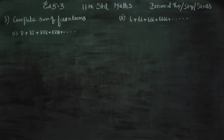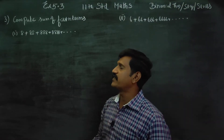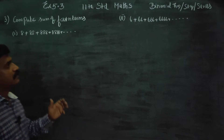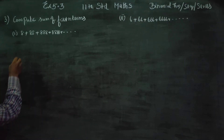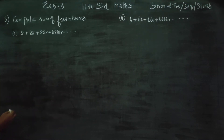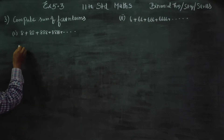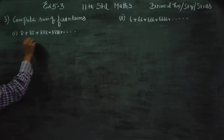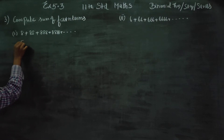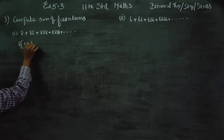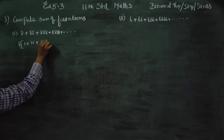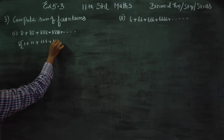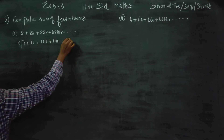Dear 11th Standard students, in exercise number 5.3, sum number 3, compute the sum of first n terms. If you look at it, it will be a GP — this is a revision from 10th Standard. The series is: 1 plus 11 plus 111 plus 1111 dot dot dot n terms.